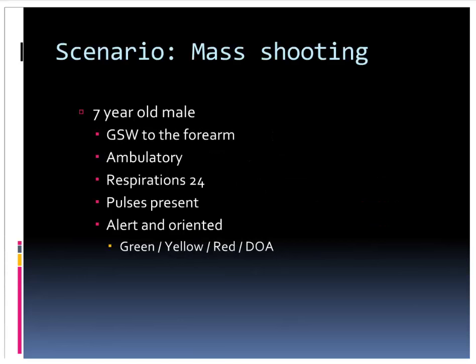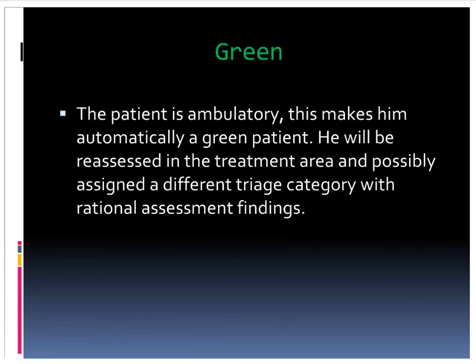A seven-year-old male with a gunshot wound to the forearm. He's able to walk, breathing 24 times per minute, has a pulse at his wrist with good capillary refill, and is able to follow commands — acting accordingly as we'd expect a seven-year-old to act in this situation. This patient is green. It's super tough to say because it's a kid, but the patient is green. They're able to walk, so there's obviously enough oxygen circulating to his brain that he can make his feet move. For this initial START triage, this patient is a green.